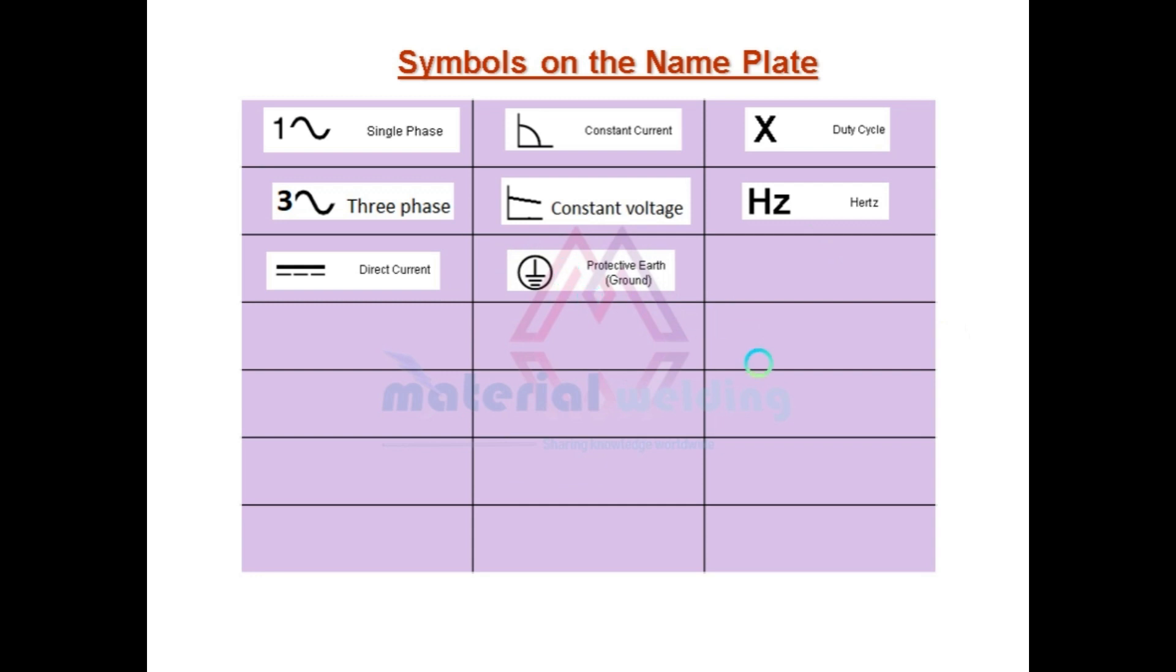This symbol is for earth protection available or not for the specific welding machine. U1 means the primary voltage value. This is for type of line connector. So mostly either you will see here single phase AC or three phase AC, and either two pin or three pin type.